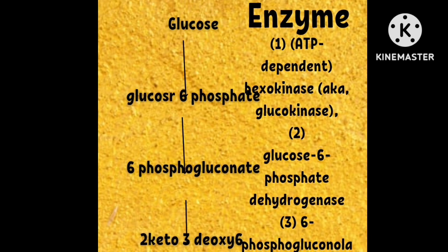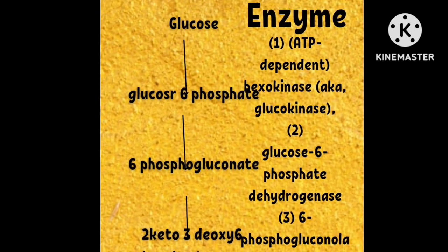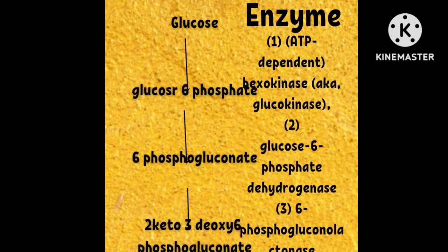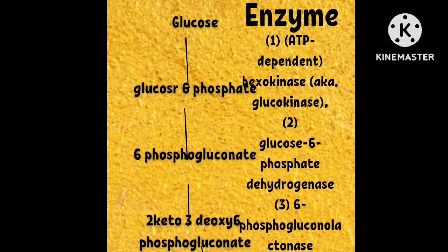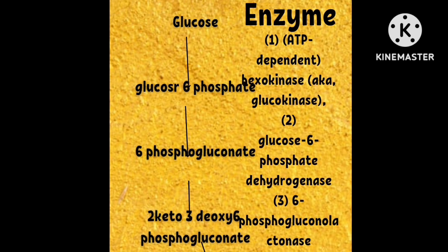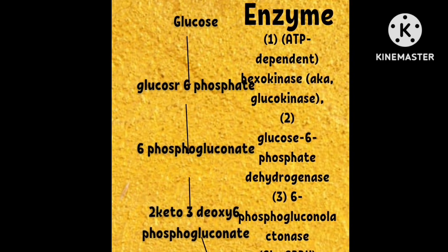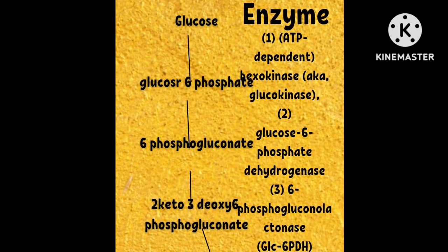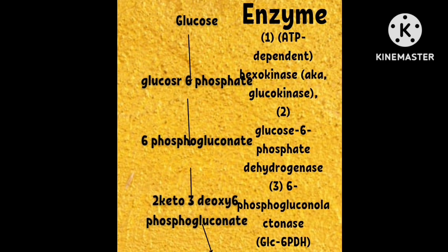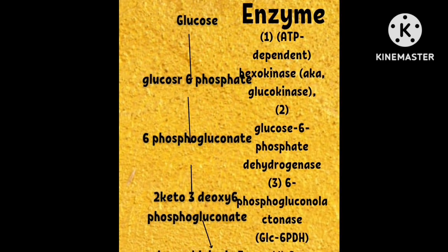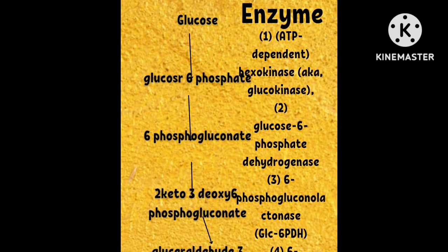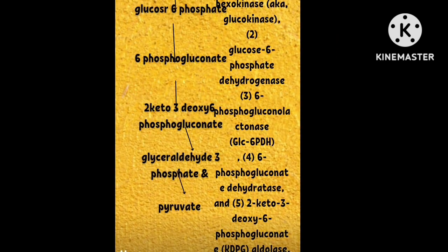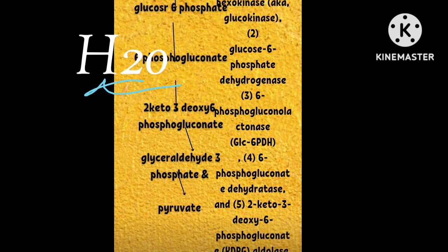Then, 6-phosphogluconate is converted to 6-phosphogluconic acid in the presence of the enzyme hydrolase, where 6-phosphogluconolactone is converted to 6-phosphogluconic acid. This 6-phosphogluconic acid is then converted to 2-keto-3-deoxy-6-phosphogluconate (KDPG) by the enzyme 6-phosphogluconate dehydratase, and a water molecule is released.